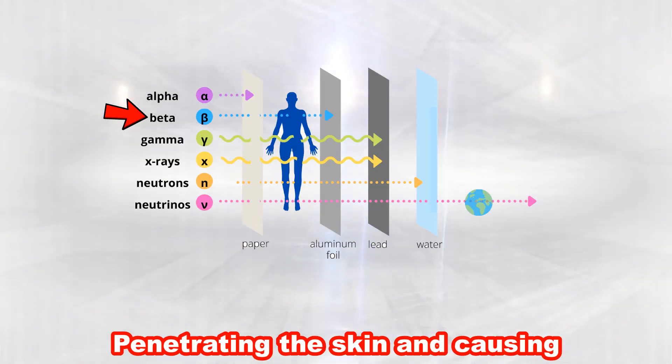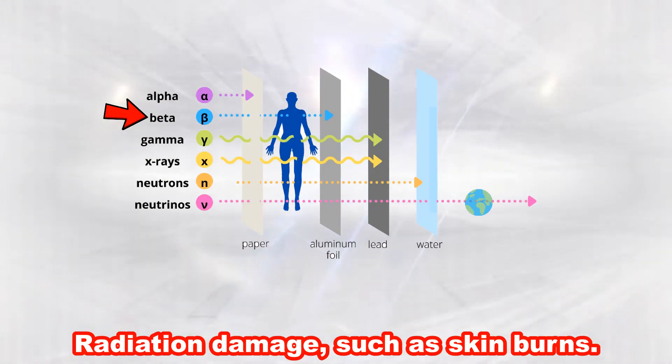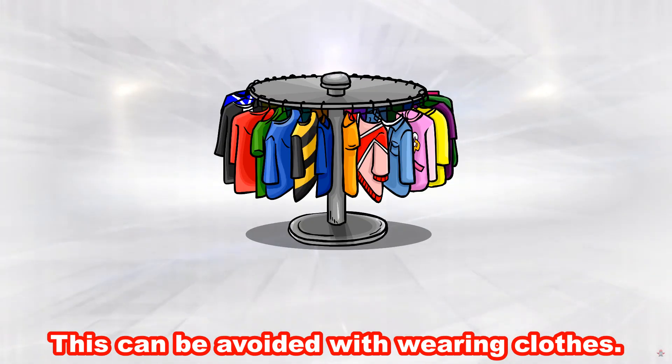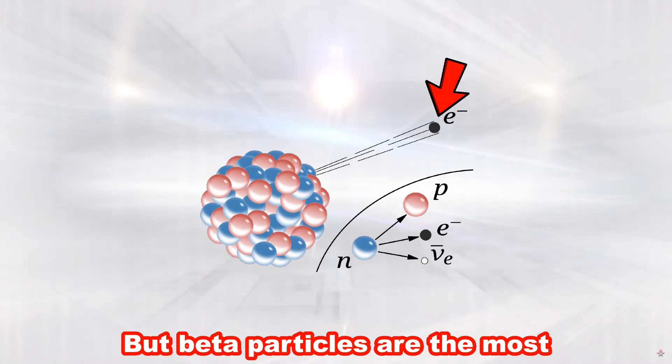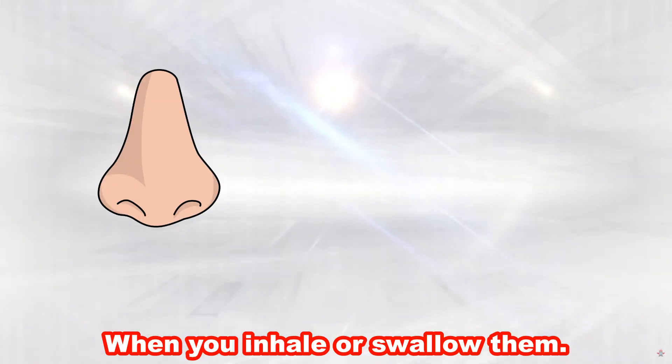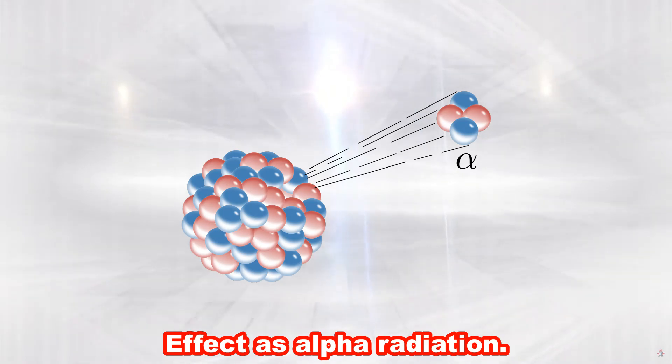Beta particles are capable of penetrating the skin and causing radiation damage, such as skin burns. This can be avoided with wearing clothes. But beta particles are the most dangerous when you inhale or swallow them. This causes the same effect as alpha radiation. Meaning it can also cause cancer.